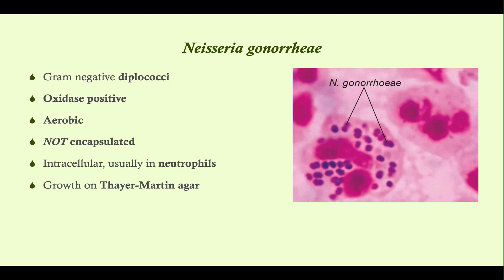Because Neisseria meningitis has a capsule, we can use that capsule to make a vaccine against it. We cannot do that for Neisseria gonorrhea — so you cannot make a vaccine against gonorrhea. Like Neisseria meningitis, gonorrhea grows on Thayer-Martin agar, which is selective for the Neisseria species. If you're not familiar with Thayer-Martin agar, go back and watch the Neisseria overview video.